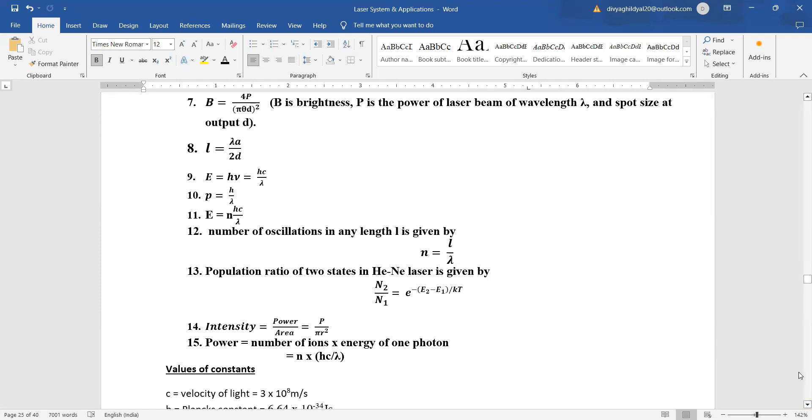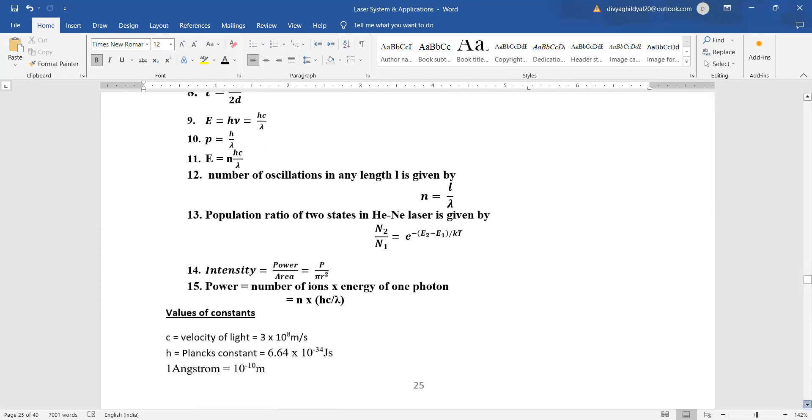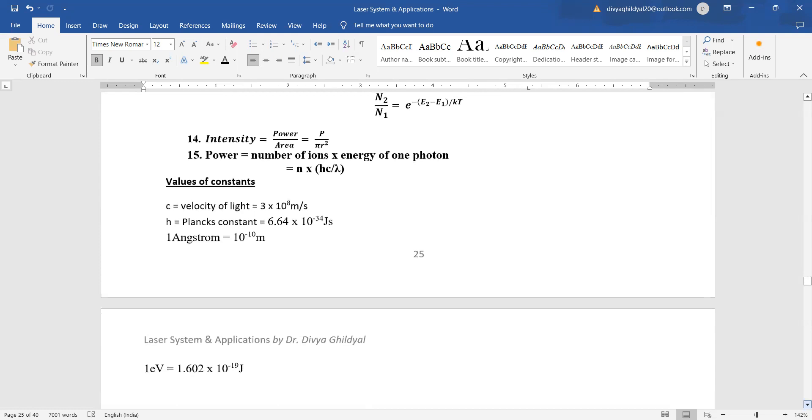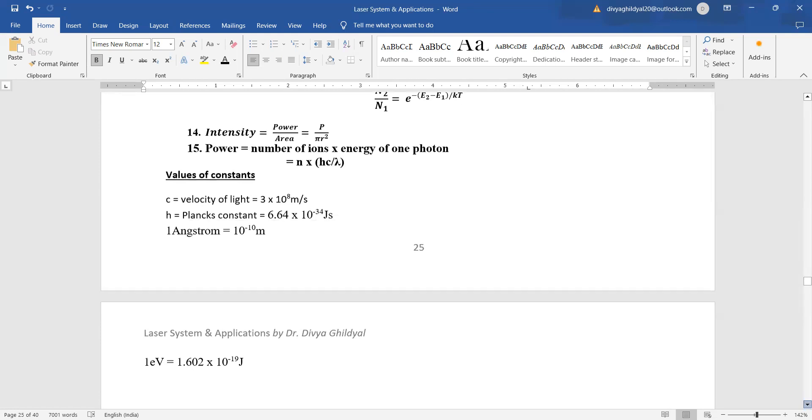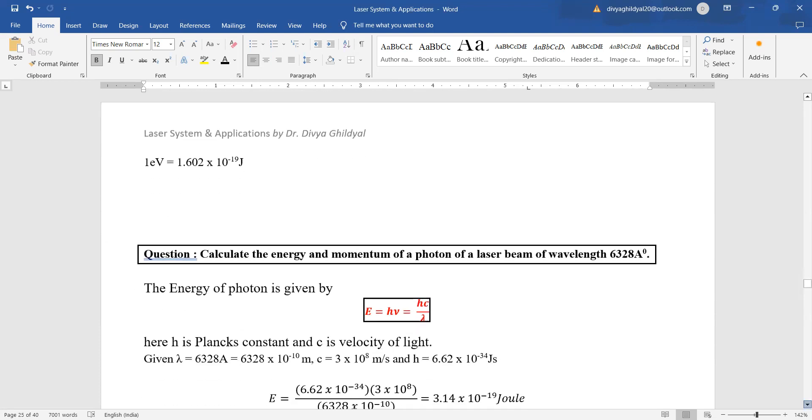Intensity is power upon area. Power is number of ions into energy of one photon. What constants will I be requiring? Velocity of light, which is 3 times 10 to the power 8 meter per second, Planck's constant, 1 angstrom equals 10 to the power minus 10 meter, and 1 electron volt equals 1.6 times 10 to the power minus 19 joules.